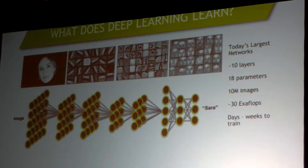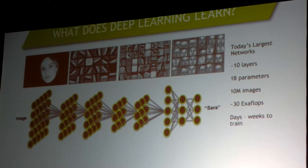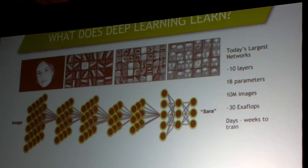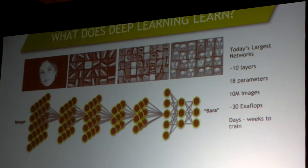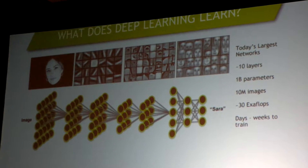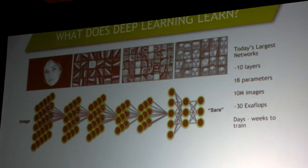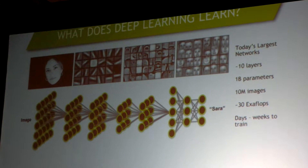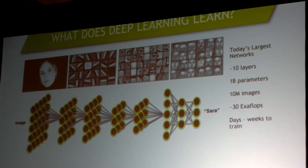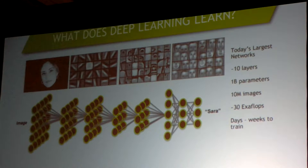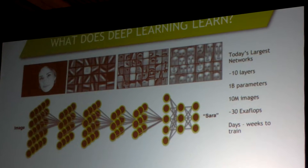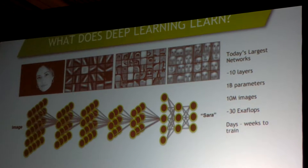Those are called Gabor filters — they're line and edge filters. It makes the observation that you can construct, hierarchically, any feature that you can draw with these simple basis functions. So for faces, you take these lines and edges, you construct parts of a face and then an entire face. These are hierarchical feature sets.